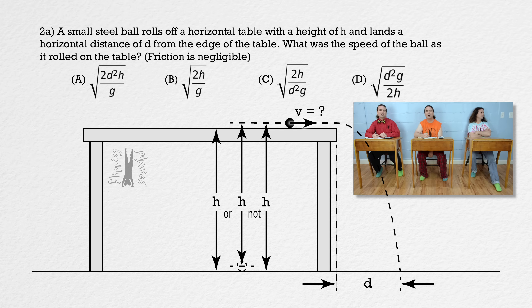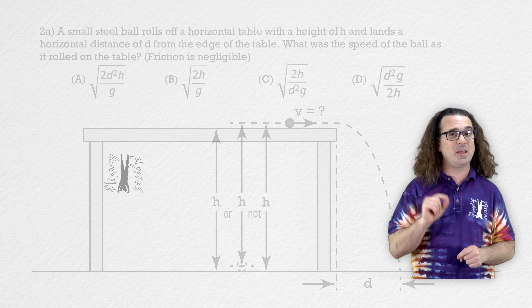Those were two typical types of projectile motion questions you may be asked on the AP Physics 1 exam: the first where you need to break the initial velocity into its components in the x and y directions, and the second where the initial velocity of the projectile in the y direction equals zero. And of course, I gave you practice letting go of your numbers dependency. Thank you very much for learning with me today.